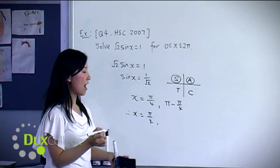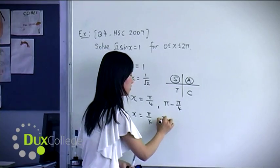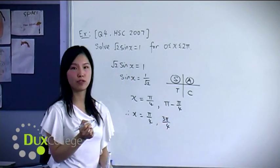And finally, you have pi over 4 and 3 pi over 4 as your final answer.